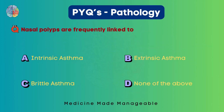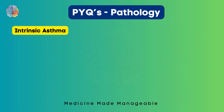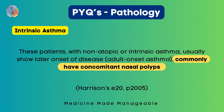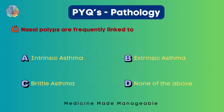Nasal polyps are frequently linked to intrinsic asthma, extrinsic asthma, brittle asthma, or none of the above. The correct answer is intrinsic asthma. Quoting directly from Harrison's: patients with non-atopic or intrinsic asthma usually show later onset of disease and commonly have concomitant nasal polyps. The reference is included for further reading. So the correct answer is option A.